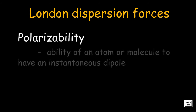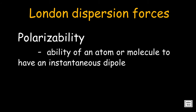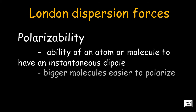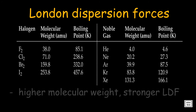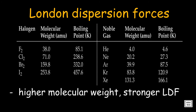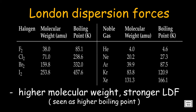Polarizability is the ability of an atom or molecule to have an instantaneous dipole. In general, bigger molecules are easier to polarize — larger atoms have larger electron clouds, which are easier to polarize. Thus, the strength of dispersion forces tends to increase with increased molecular weight, as seen in the table where stronger forces are reflected in higher boiling points.